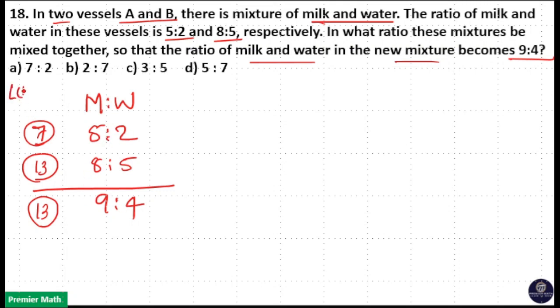LCM is equal to, LCM of 7, 13 and 13 is equal to 7 into 13 that is 91. Multiply first ratio with 13 because this is 7 parts. You need to make it 91 parts. 7 into 13 is equal to 91. Multiply it with 13.